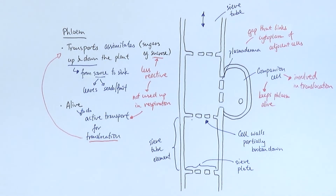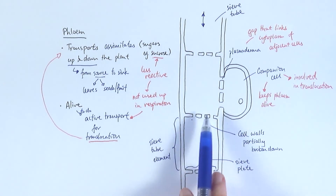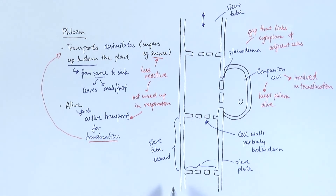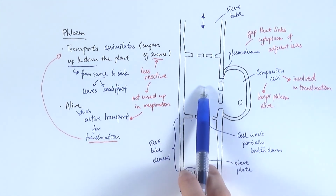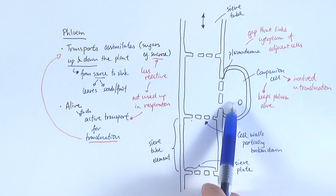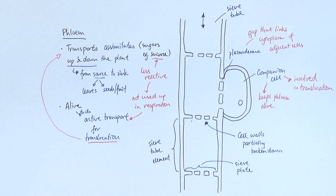Lastly, the phloem is the vessel in the vascular bundle that transports assimilates up and down the plant from the source to the sink. It is alive, unlike the xylem, because it needs to do active transport for translocation to occur. The cell wall between cells is only partially broken down, forming sieve plates, and between two sieve plates is a sieve tube element — the entire vessel is called the sieve tube. The plasmodesmata on the walls of the sieve tube link the phloem and the companion cells together, allowing substances to cross between them. The companion cell is the life support system for the phloem and plays a very important role in translocation.